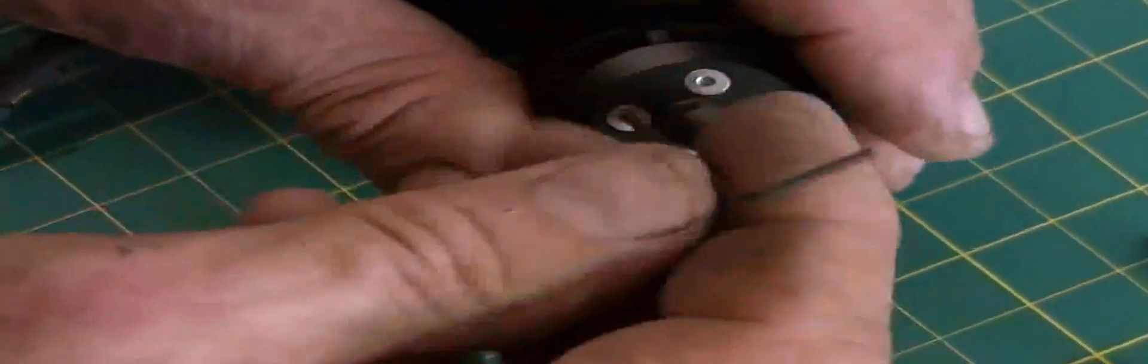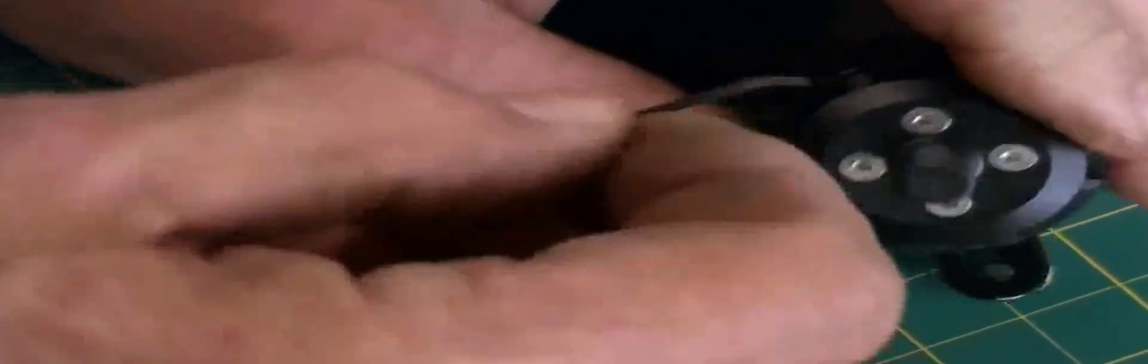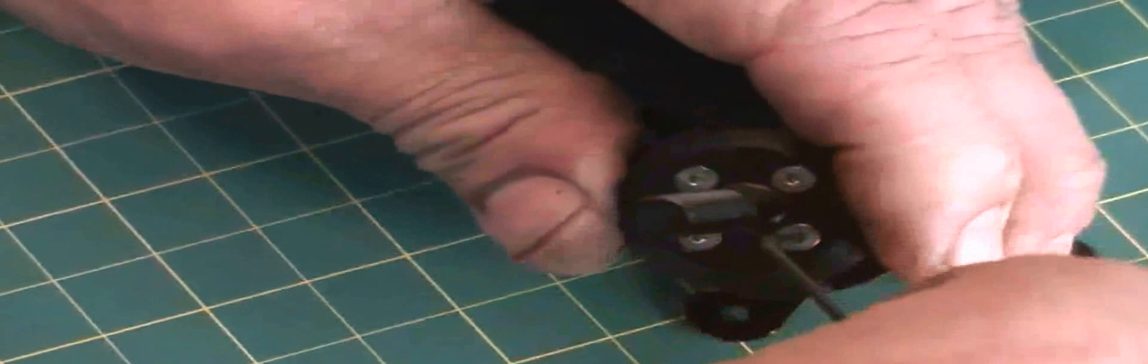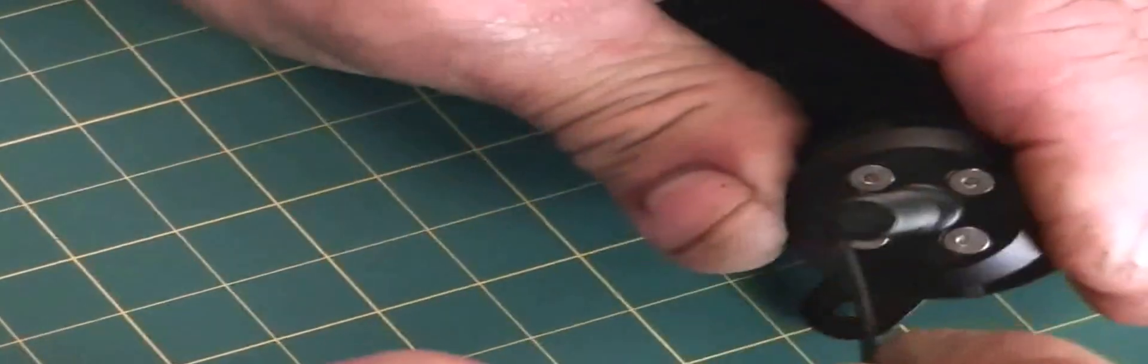So I'm going to snug this one up and give it a nice snug. It doesn't have to be super duper tight. You don't want to strip it out. Tighten up the cross, and go to the other side and tighten those up.